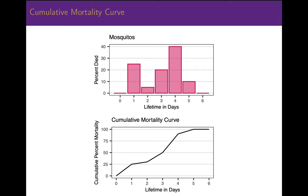You may further wish to add a cumulative mortality curve to describe the cumulative proportion of deaths. This is shown in the bottom plot. The cumulative mortality curve is 25% on day 1, then 5% more giving 30% on day 2, then 20% more giving 50% on day 3, and so on until all mosquitoes have died. The cumulative percent dead is indicated by the black line.